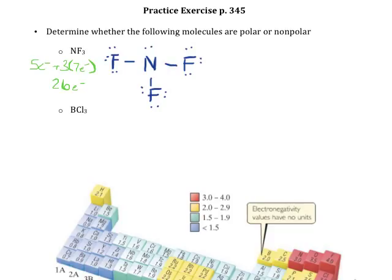We want to think about what the shape actually looks like in three dimensions. Just because I drew it like it's T-shaped doesn't mean it actually is. When we figure out the geometries, we want to take a look at the central atom. Nitrogen is our central atom, and it's got four electron domains. Four electron domains means tetrahedral electron domain geometry, but since three are bonding and one is non-bonding, this is actually going to be a trigonal pyramidal molecule.